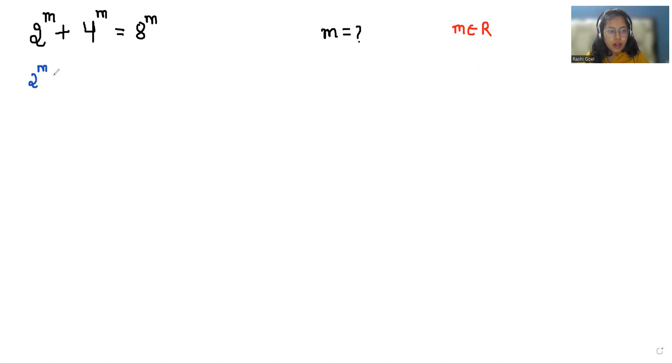So first we can write this 4^m as (2²)^m, similarly 8^m as (2³)^m. As we know the identity of exponents, (a^m)^n can be written as a^(mn). So 2^m + (2^2)^m = (2^3)^m, which becomes 2^m + 2^(2m) = 2^(3m).